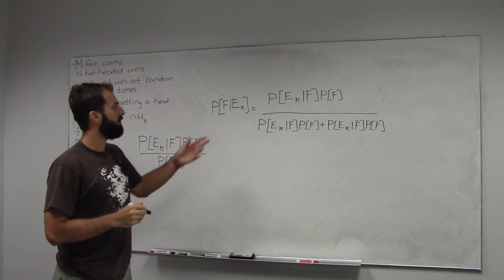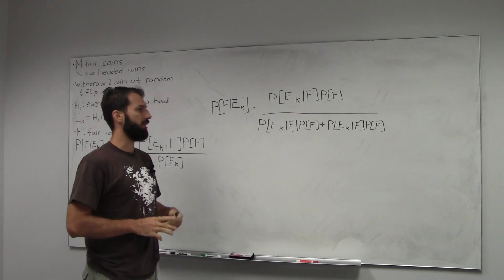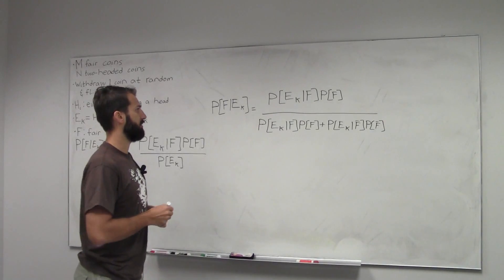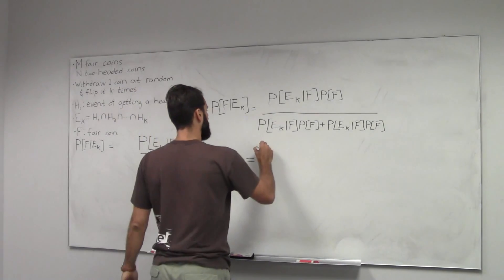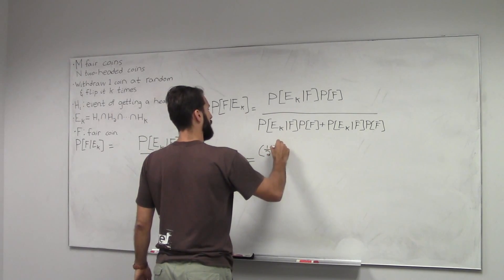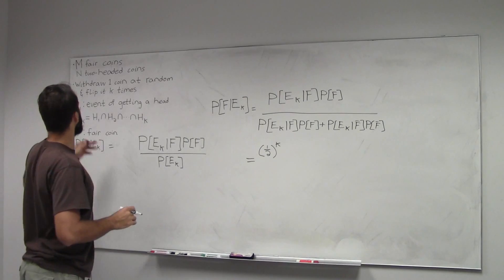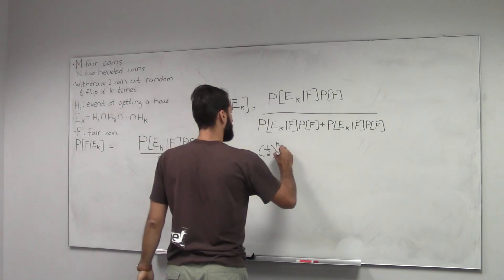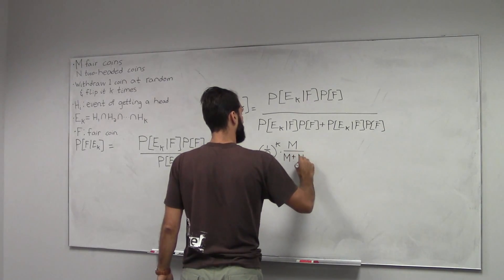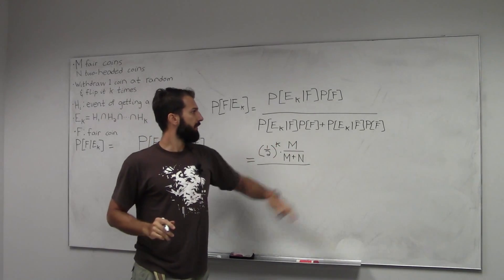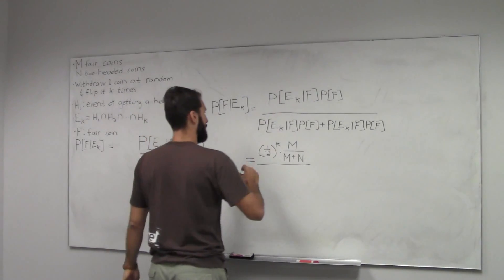We used Bayes' rule and then the law of total probability to express this term as conditional probabilities given you have a fair coin or you don't. This first term is what's the probability you get k heads in a row given you have a fair coin — those are independent events, so it's one-half to the k power. The probability that you obtain the fair coin — every coin that you choose is equally likely — so that will be m over m plus n coins.